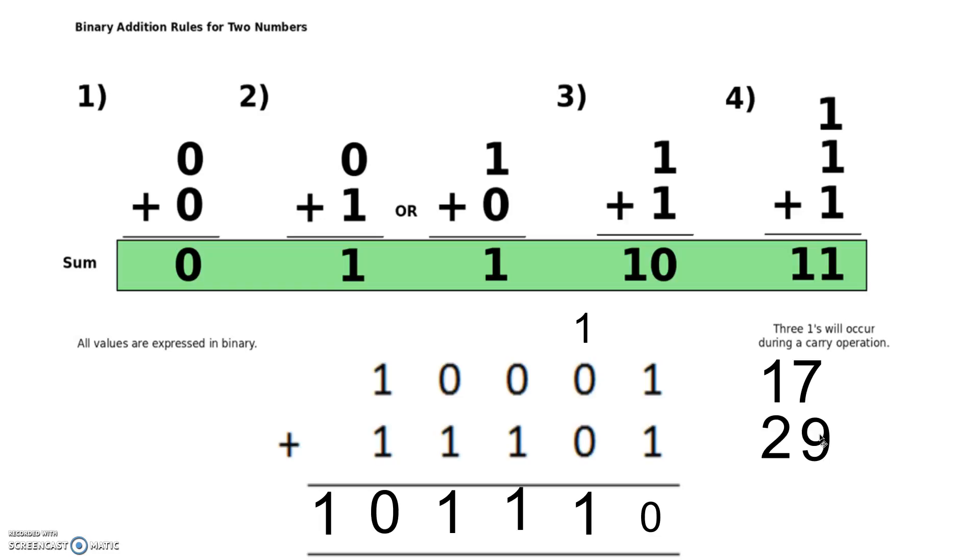So if we have a look down here, we've got 32 plus 8 which is 40, plus 4 which is 44, plus 2 which is 46. And the thing is, if we add 17 and 29, we get 46.